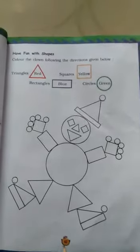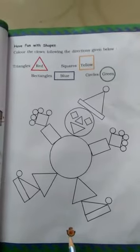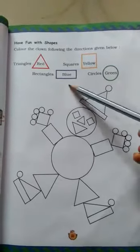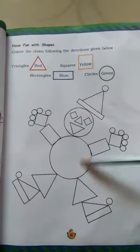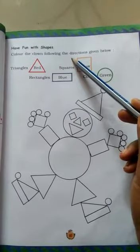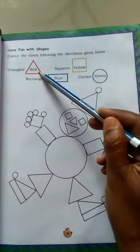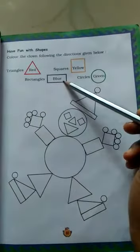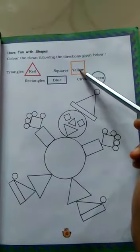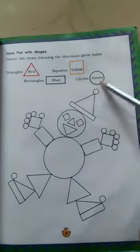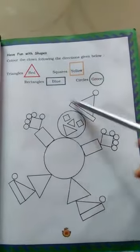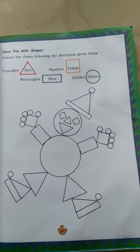Now open page number 61 and there is a clown. Color the clown following the direction given below. Triangles into red color. Rectangle in blue color. Square yellow color and circle in green color. All these do and send it to me.